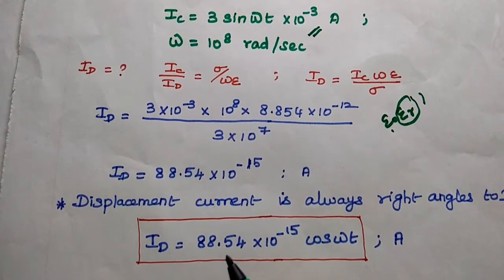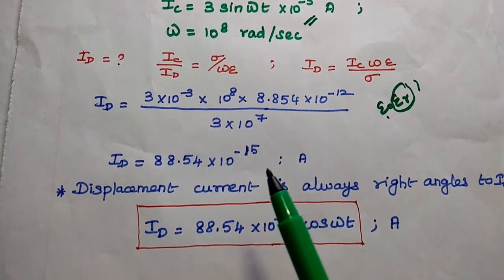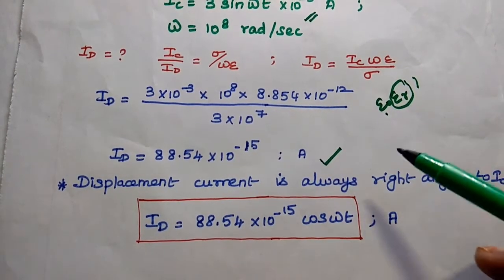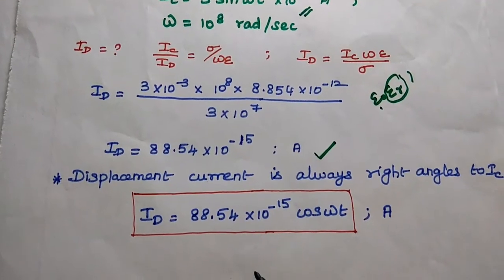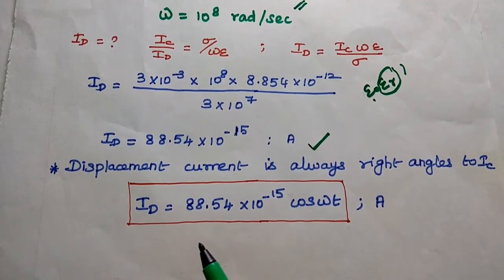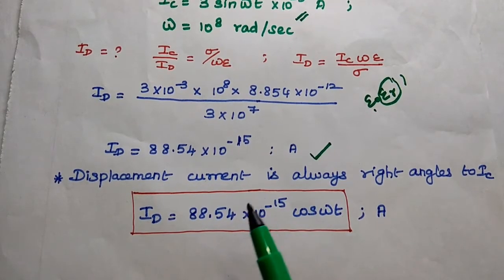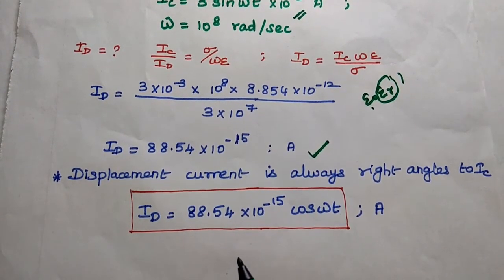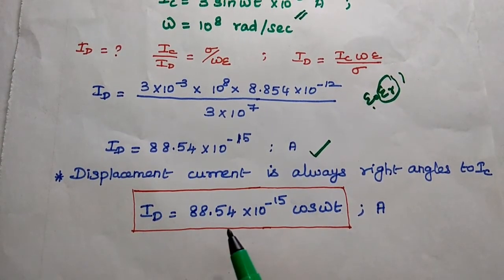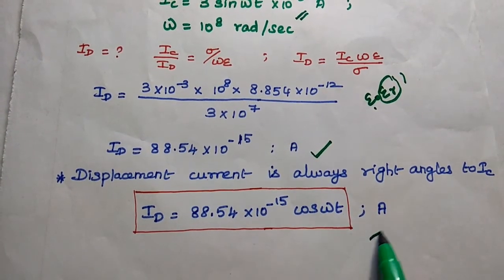We get the displacement current as 88.54 × 10⁻¹⁵ amps. After taking the magnitude, we include the direction. The displacement current is always at right angles to the conduction current — if the conduction current has a sine value, the displacement current is represented with a cosine value. So Id = 88.54 × 10⁻¹⁵ cos(ωT) amperes.